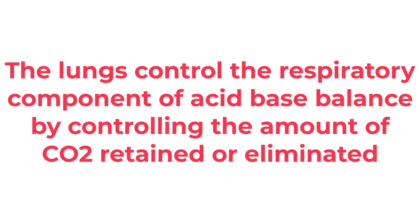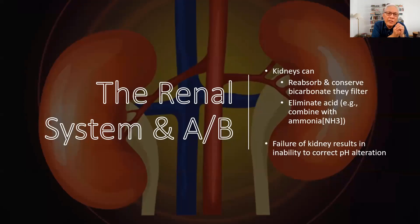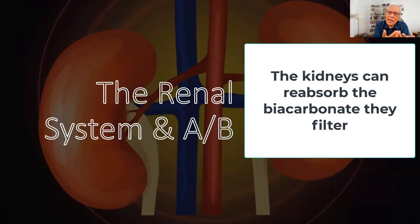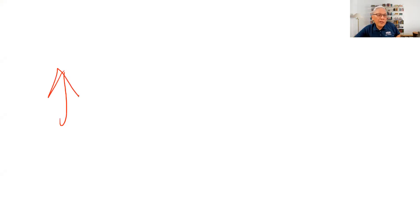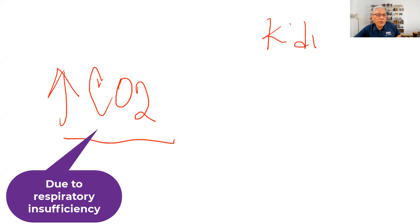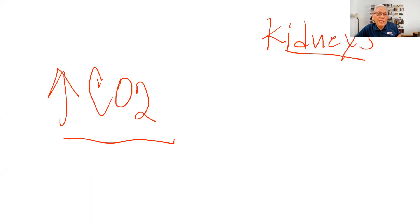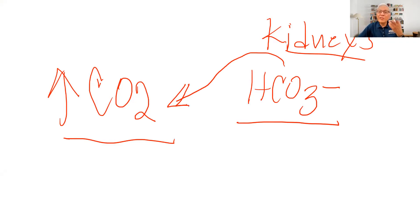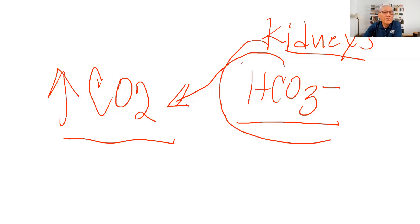That explains the role of the lungs in maintaining acid-base balance. The other system is the renal system, which we call the metabolic component of acid-base. The kidney can potentially reabsorb and conserve bicarbonate when needed. If there is an increase in CO2 resulting from the lungs being unable to eliminate carbon dioxide efficiently, the kidneys can conserve bicarbonate. Bicarbonate is a buffer — it makes a strong acid less acidic — so the kidneys will save bicarbonate to compensate.